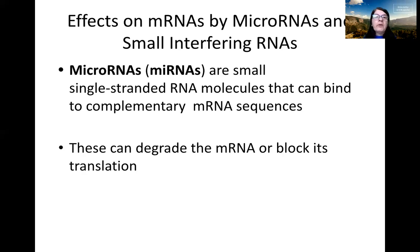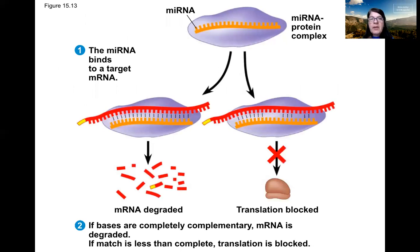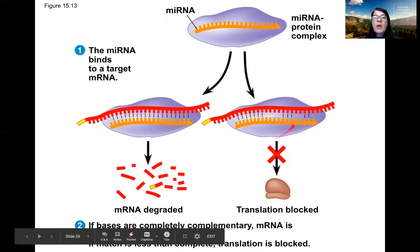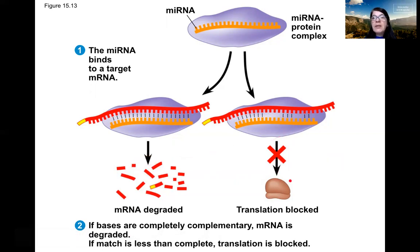One such example is microRNAs. MicroRNAs are small single-stranded RNA molecules that can bind to complementary mRNA sequences — they can either degrade the mRNA or block its translation. MicroRNAs and siRNAs — small interfering RNAs — are small RNA molecules that can base pair with a specific mRNA. They're complementary to one or a few specific mRNA molecules, and once they base pair, proteins will either degrade the mRNA or that base pairing can block translation. In either case, no protein will be produced.